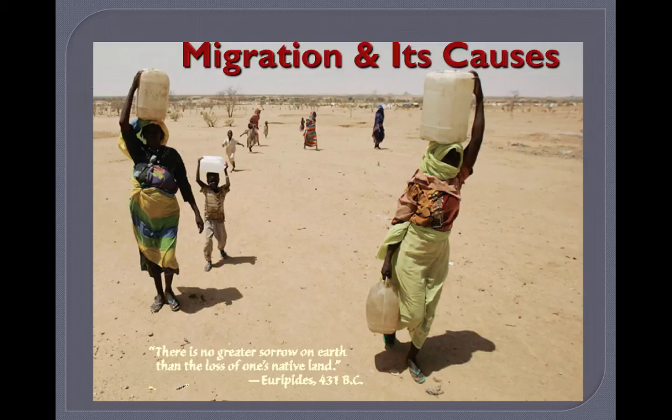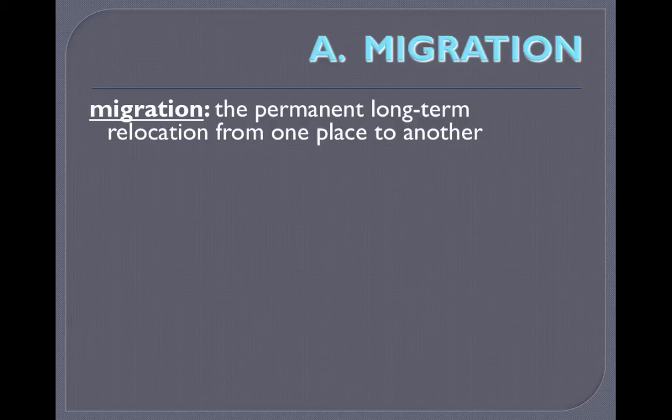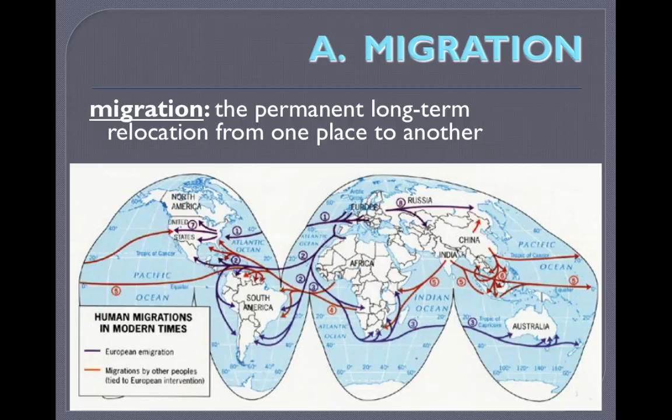Let's talk migration and its causes. What is migration? Migration is different from circulation in that circulation is your everyday, daily, temporary movement, but migration refers to permanent, long-term relocation from one place to another.